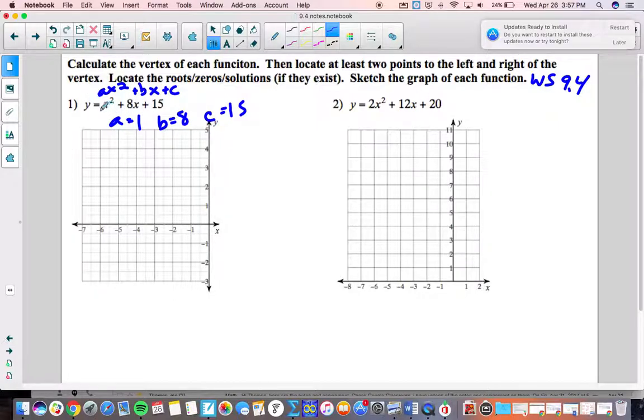Because my leading coefficient, this 1, is positive I'm thinking that this is going to be opening upward. Alright let's go after the vertex. To calculate the x value of the vertex we're going to take the opposite of b divided by 2a. So that's going to be negative 8 divided by 2 times 1, which equals negative 4.